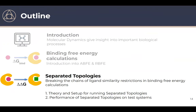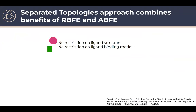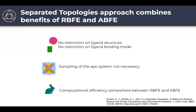This leads us to the alternative method: separated topologies, which is part of the dual topology family of approaches. With separated topologies, we try to combine benefits of both absolute and relative approaches. Similar to the absolute approach, we're not restricted on ligand structures. At the same time, it is a relative approach — one or parts of both ligands always occupy the binding site — so we think the computational efficiency is somewhere between standard RBFE and absolute binding free energy calculations.